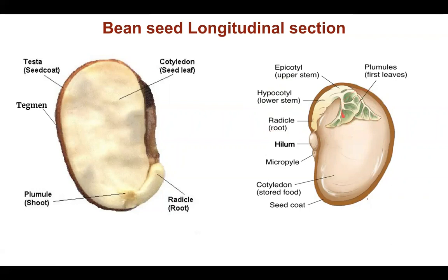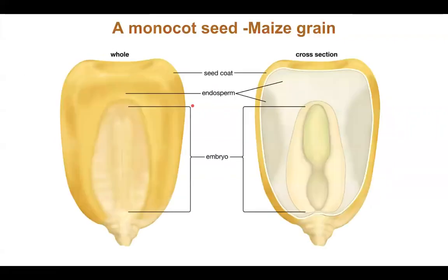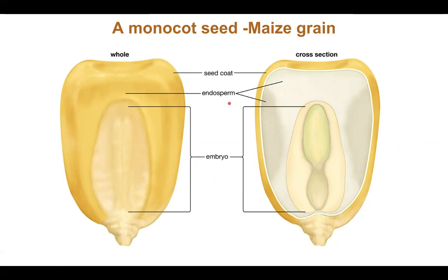The cotyledons form the first leaves, also called seed leaves. They perform photosynthesis and help provide nutrition to the growing seedling. A monocot seed has only one single seed leaf or a single cotyledon. The embryo also has radicle and plumule. In monocot seeds, there is a structure called the endosperm which stores nutrition — unlike beans, where the cotyledon stores food. Bean is an example of an exalbuminous seed, whereas a monocot with endosperm is an example of an endospermic seed.